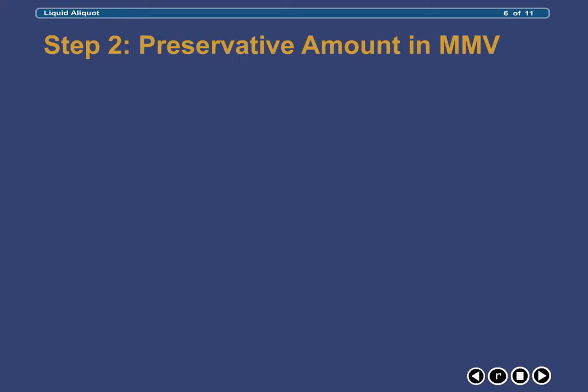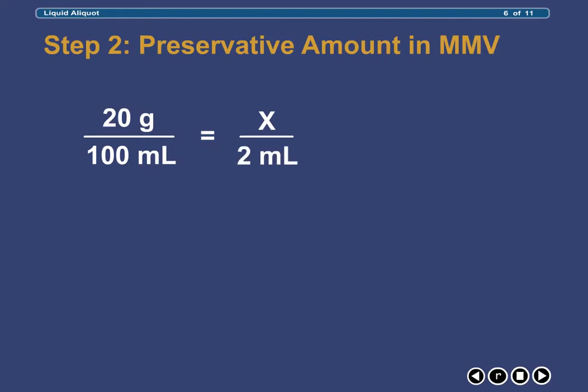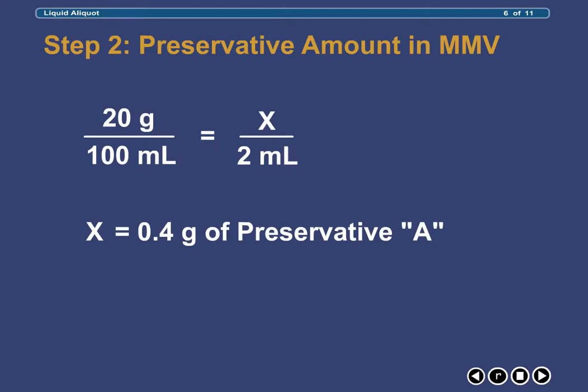Before proceeding, we need to calculate the amount of Preservative A that resides in the minimum measurable volume of 2 milliliters that we selected. Setting up the proportion, we determine that the minimum measurable volume of 2 milliliters contains 0.4 grams of Preservative A.